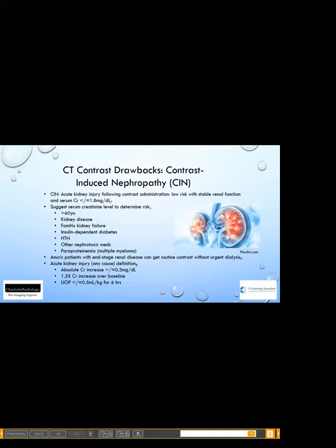Contrast-induced nephropathy happens with CT contrast — it is acute kidney injury following contrast administration. There is low risk with stable renal function. We like to get a serum creatinine for patients over 60, or if they have kidney disease, family history of kidney failure, diabetes, hypertension, nephrotoxic medications, or paraproteinemia such as multiple myeloma. Anuric patients with end-stage renal disease can still receive contrast since their kidneys aren't working and won't sustain greater damage. The diagnosis requires an absolute creatinine increase of 0.3, or 1.5 times the baseline, and urine output ≤0.5 mL/kg over six hours.